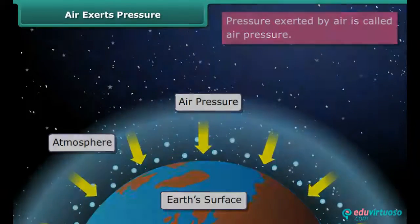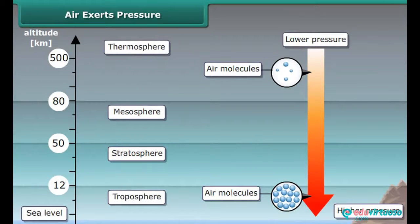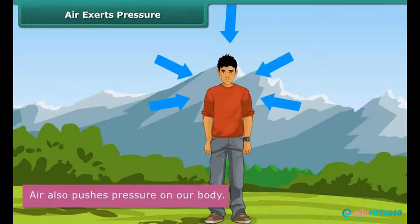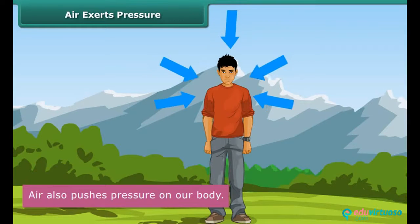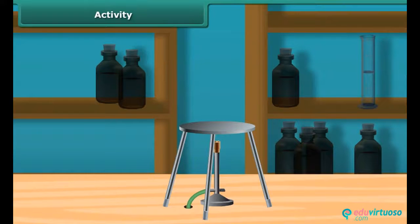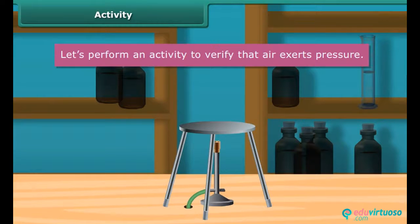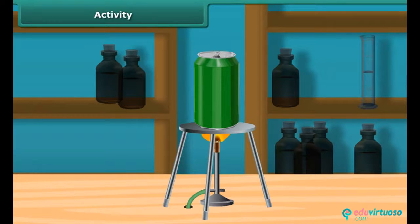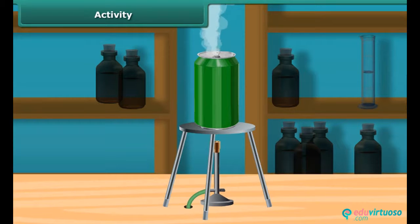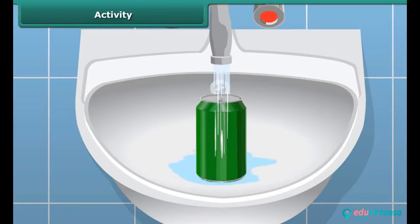The earth's atmosphere is 80 kilometers deep. As we move upwards, the air pressure decreases. Air also pushes pressure on our body. Now let's perform an activity: take a tin can filled with half water and heat it on a burner. After the water starts boiling, blow out the burner and immediately put the lid on the can.